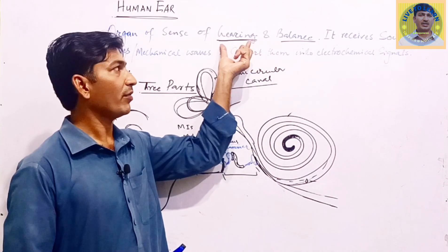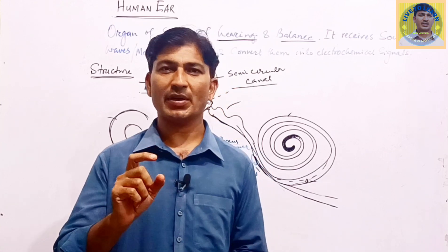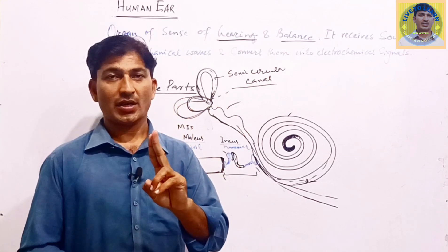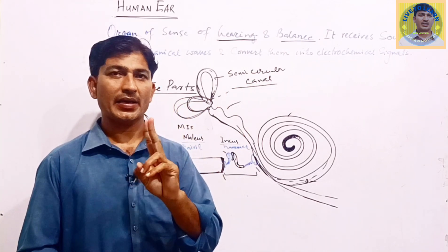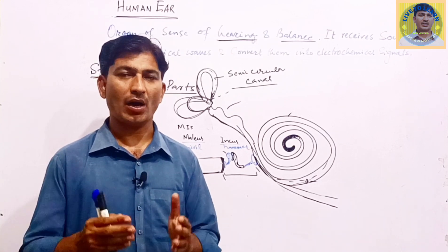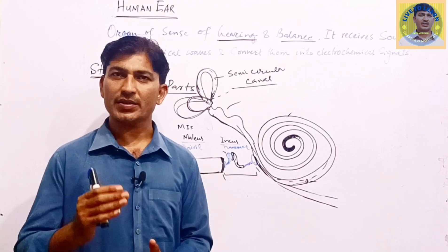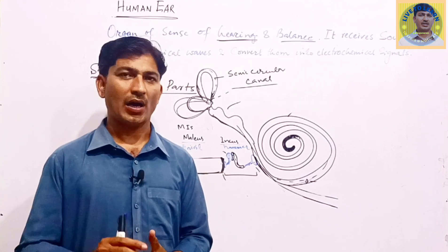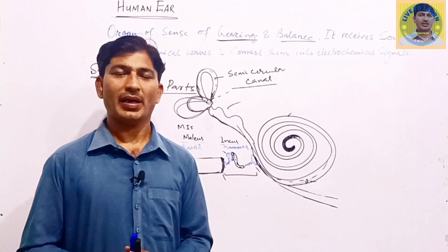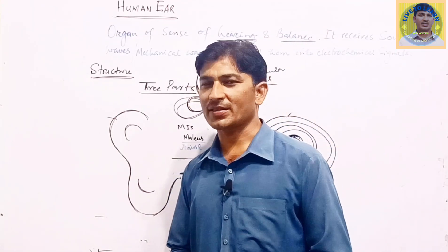The first function of the human ear is hearing — it receives the sound waves. The second important function is that it helps us in keeping our body in a balanced posture. The human ear has two functions: it helps us in hearing and it also helps us in keeping our bodies balanced. Let's see how it helps us in hearing, how we detect sound waves, what structures are involved, and how we keep our body's balance.